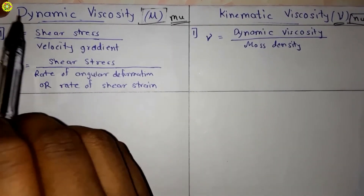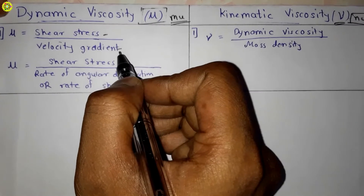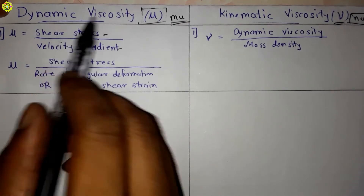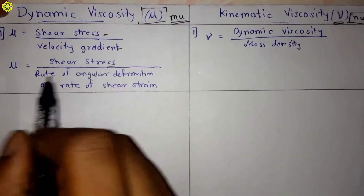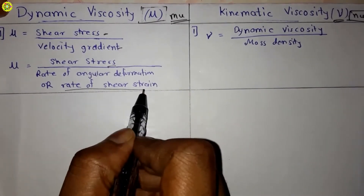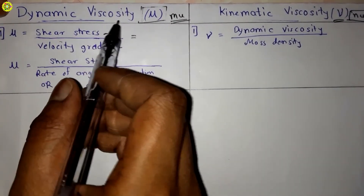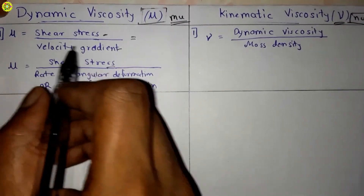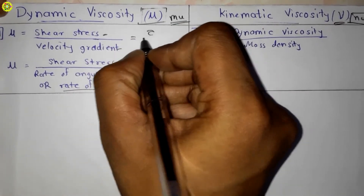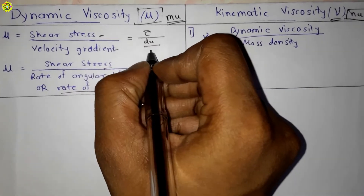The definition of dynamic viscosity: dynamic viscosity is the ratio of shear stress to velocity gradient. We can also define it as the ratio of shear stress to the rate of angular deformation, or rate of shear strain. The symbol is mu (μ), where μ equals shear stress (τ) divided by velocity gradient (du/dy).